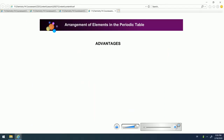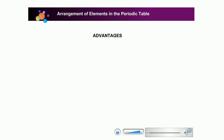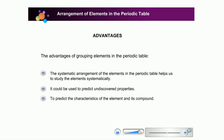What is the advantage of grouping elements in the periodic table? The ultimate advantage of the systematic arrangement of elements in the periodic table helps us to study the elements systematically, especially in their physical and chemical properties. It could be used to predict undiscovered properties, to predict the characteristics of the element and its compound, and to relate the characteristics of an element to its atomic structure. Therefore, we must be thankful to the scientists for their effort to develop the periodic table.